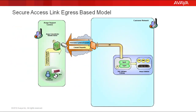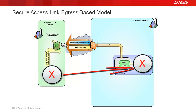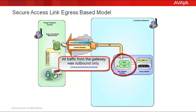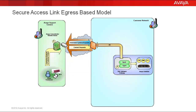The sophistication behind all of this is that throughout the entire session, never once did the user communicate directly with the CM server, and more importantly, the SAL gateway was the only device originating any traffic, all of which was outbound. And this is how the Avaya Secure Access Link solution operates using the egress-based connectivity model.